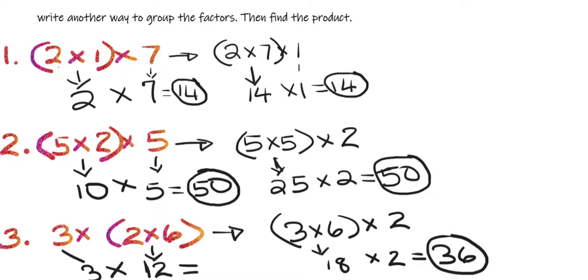So my answer is the same in both cases. So as the associative property of multiplication states, no matter how I group my factors, my product will still be the same. So no matter how I group my factors, my product will still be the same.